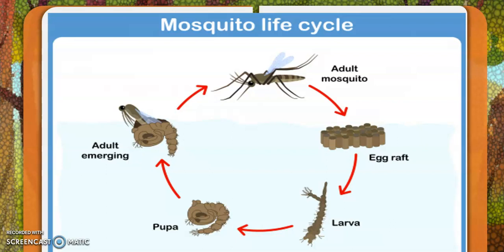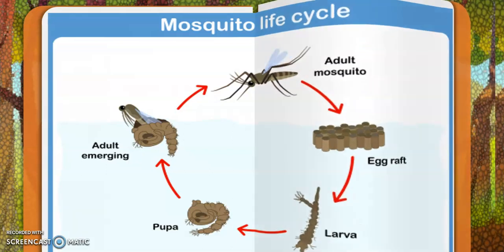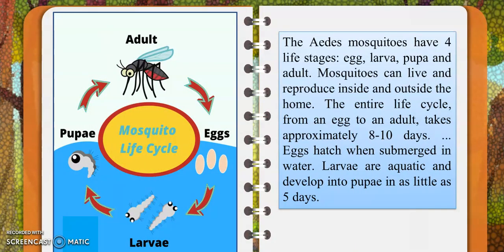The female mosquito keeps on laying a lot of eggs. Here, the plural forms are larvae and pupae. The adult mosquito has four life stages: egg, larva, pupa, and adult. Mosquitoes can live and reproduce inside and outside the home — it could be at school, hospital, or your own house. The entire life cycle from an egg to an adult takes approximately 8 to 10 days.